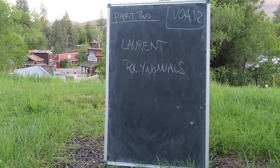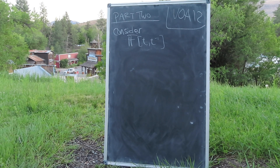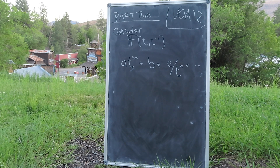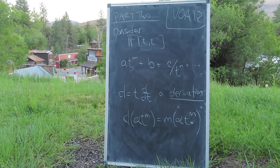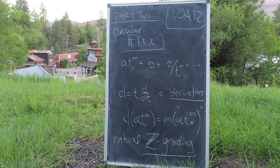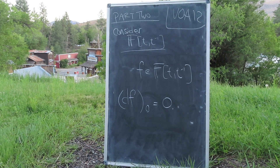The second part is the algebra of Laurent polynomials in some formal variable t. These are all possible terms with both positive and negative powers of t. A derivation on this algebra can be written as a linear operator t times the derivative d by dt. Note that monomials of distinct powers of t are eigenspaces of this derivation operator with the degree as the natural eigenvalue, which facilitates a natural Z-grading on the algebra of these polynomials. One important thing to note is that the projection of df onto the zeroth homogeneous subspace is zero for any polynomial f.